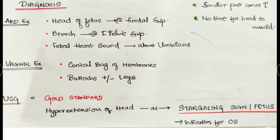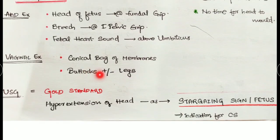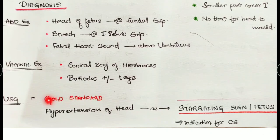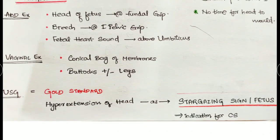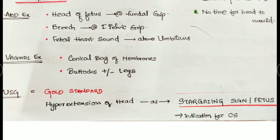For further confirmation, vaginal examination may reveal buttocks with or without legs depending on whether it is a flexed or extended position, and a conical bag of membranes coming down. The gold standard diagnostic confirmation is by ultrasonography (USG). If the child has hyperextension of its head — looking upward as if at the stars — this is called the stargazing sign. This hyperextension is an indication for caesarean section.